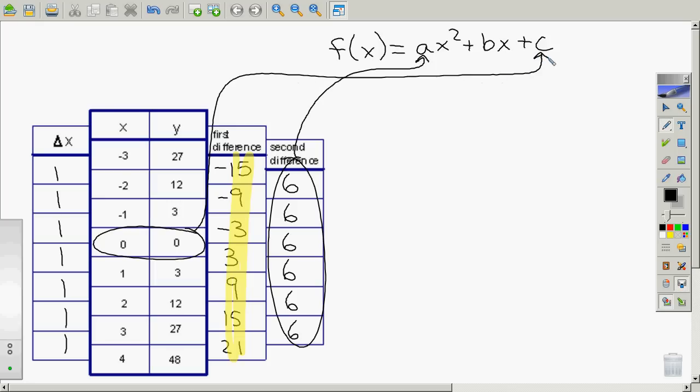So just from the little work we've done, we already know that a. We found out yesterday that a was always half of the second difference. So if the second difference is 6, a must be 3. And we know that the c is the initial value, which in this case happens to be 0.